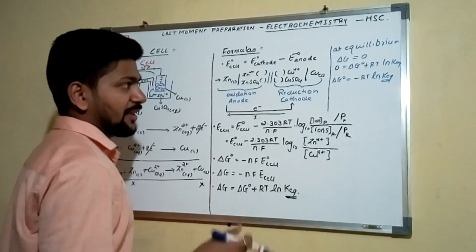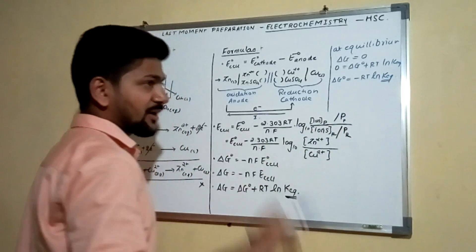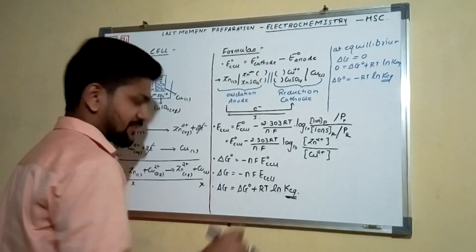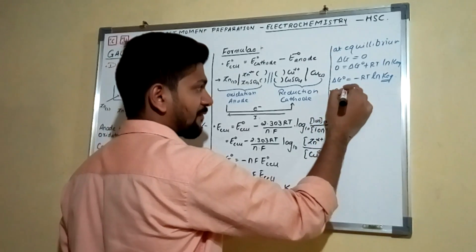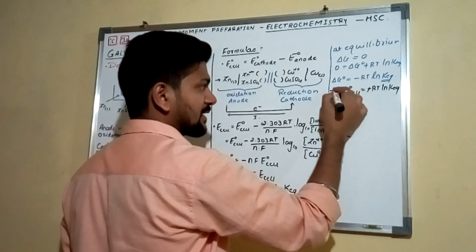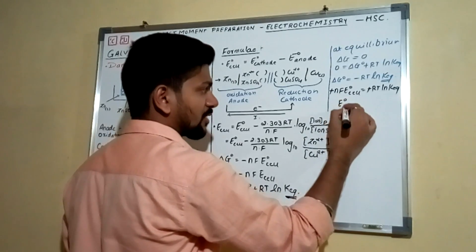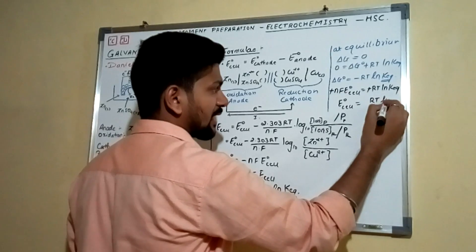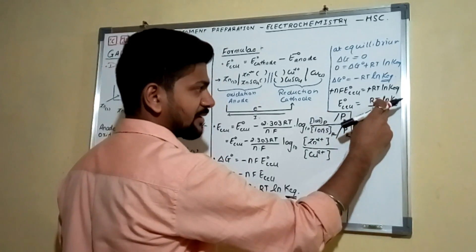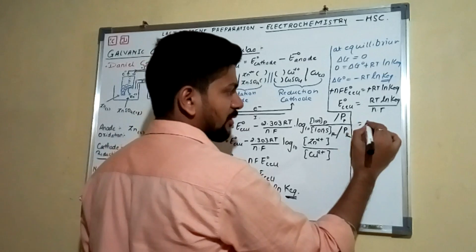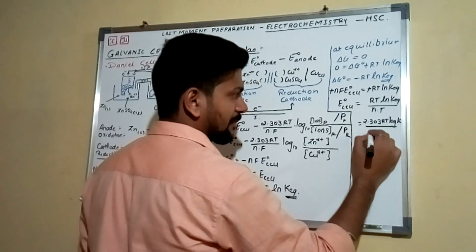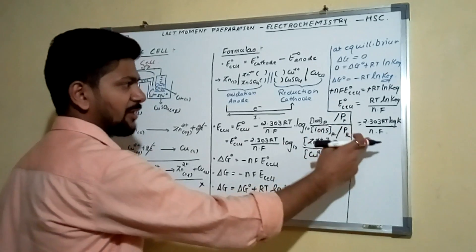Sometimes questions give you K_eq but ask for E°cell. Since ΔG° = −nFE°cell and ΔG° = −RT·ln(K_eq), you can equate them: −nFE°cell = −RT·ln(K_eq). Simplifying, E°cell = RT·ln(K_eq) / nF. To convert ln to log base 10, multiply by 2.303: E°cell = (2.303RT / nF) × log(K_eq).